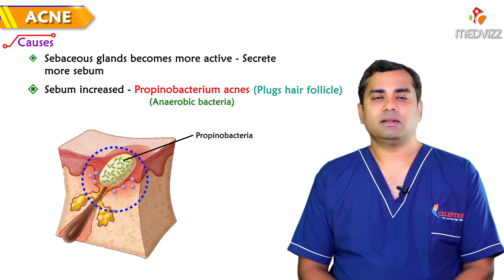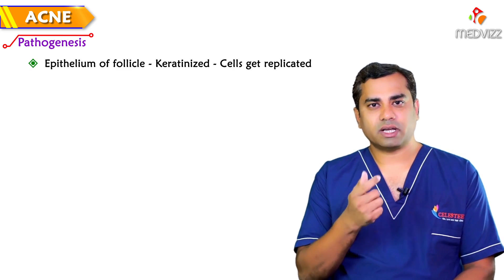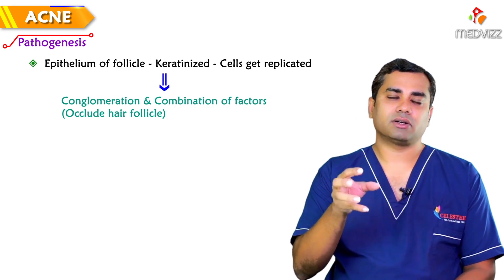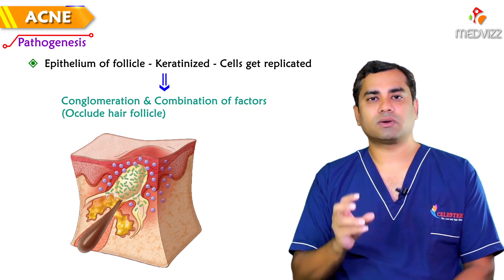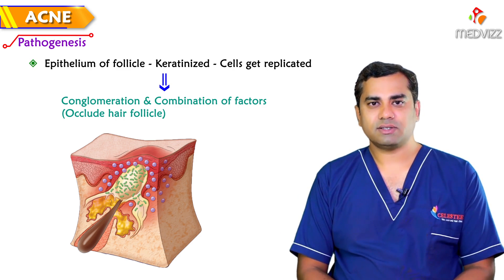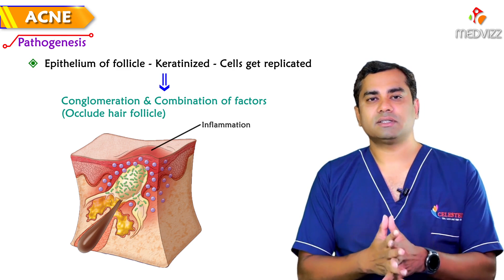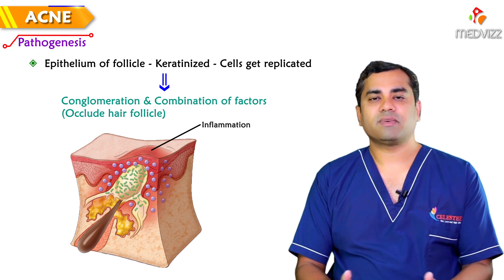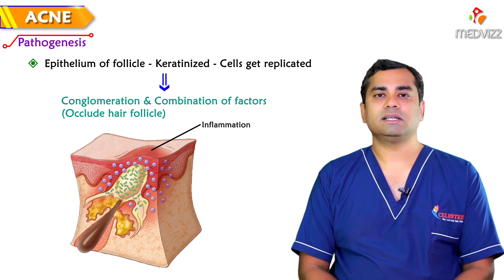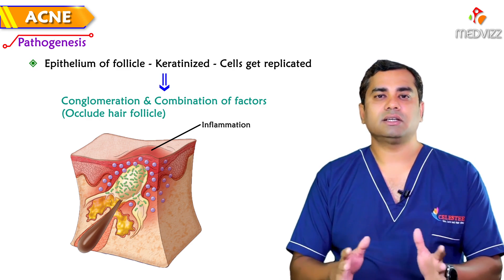Meanwhile, the epithelium around the follicular structure becomes more keratinized and more cells are replicated. There is a conglomeration of these factors which occludes the hair follicle more severely. With that, the follicular sebaceous glands increase in size, rupture at one side, and once it ruptures, inflammation is set in — with macrophages and lymphocytes attracted to the site, starting a diffuse inflammation cascade.